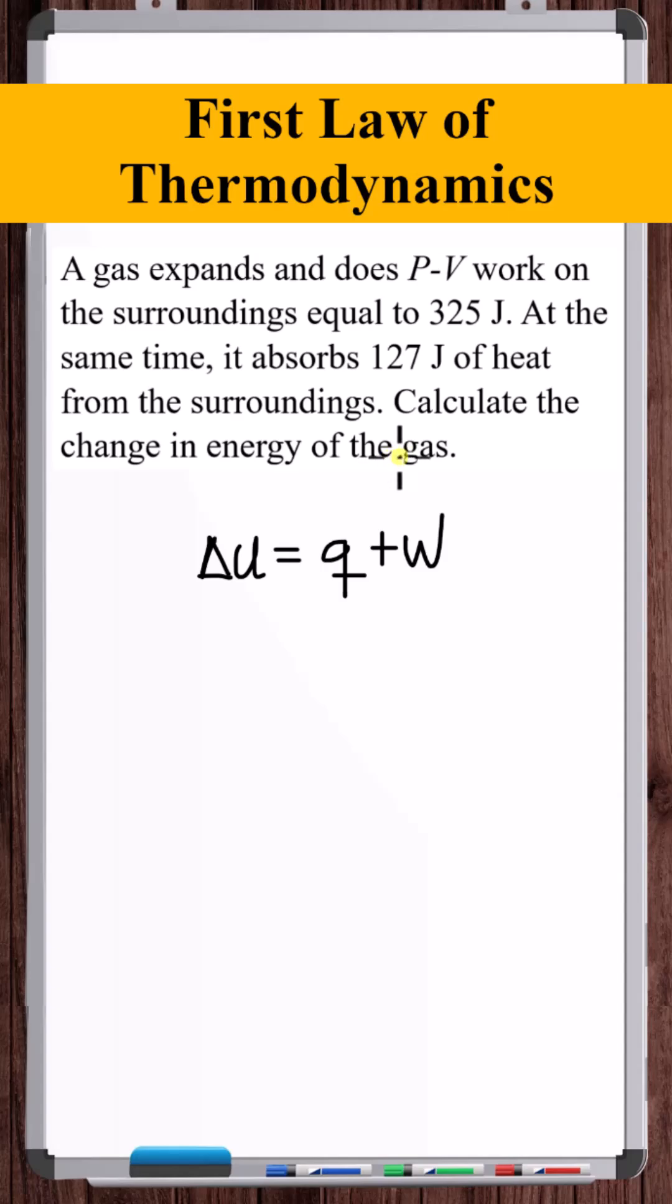So the change in energy of the gas the question is talking about is the internal energy. Furthermore, in this simplified equation, the only potential work is PV work.